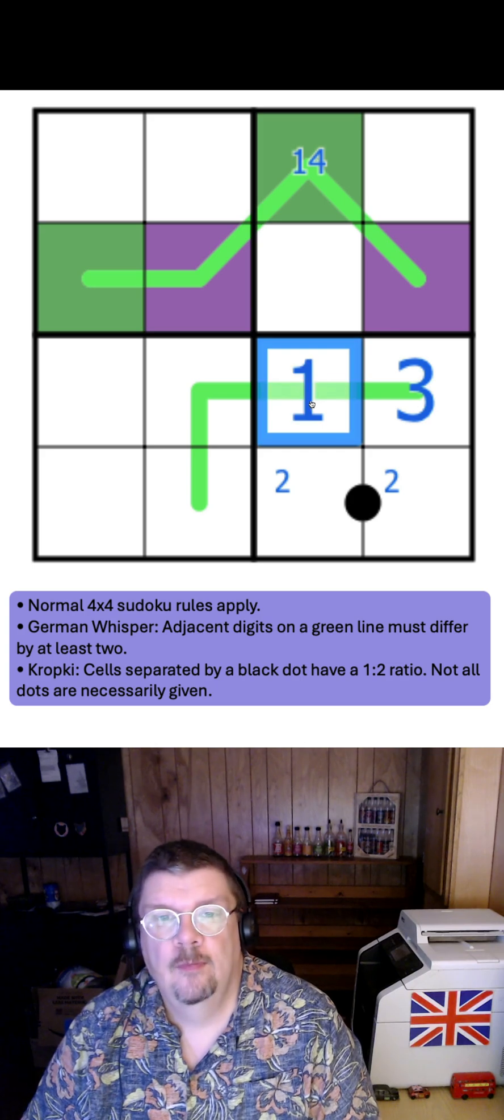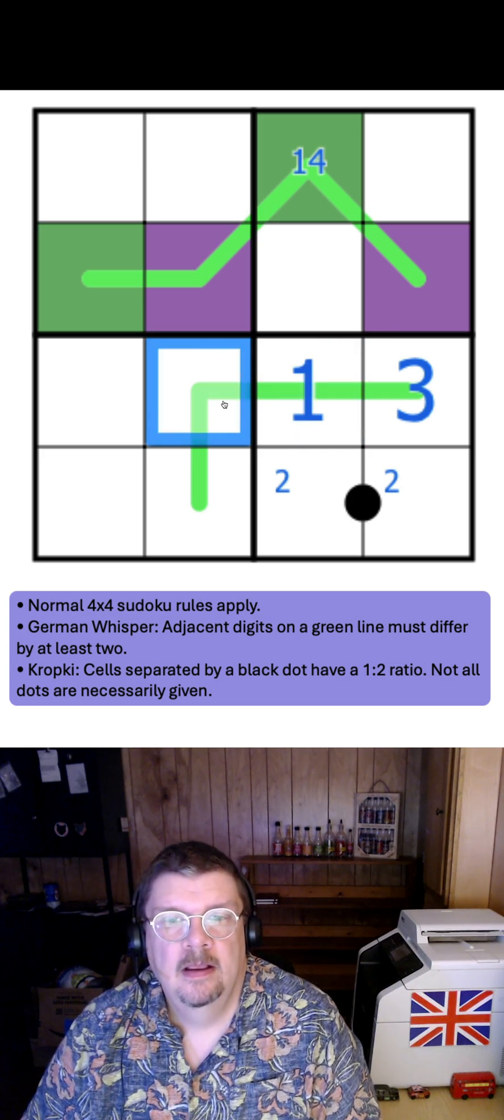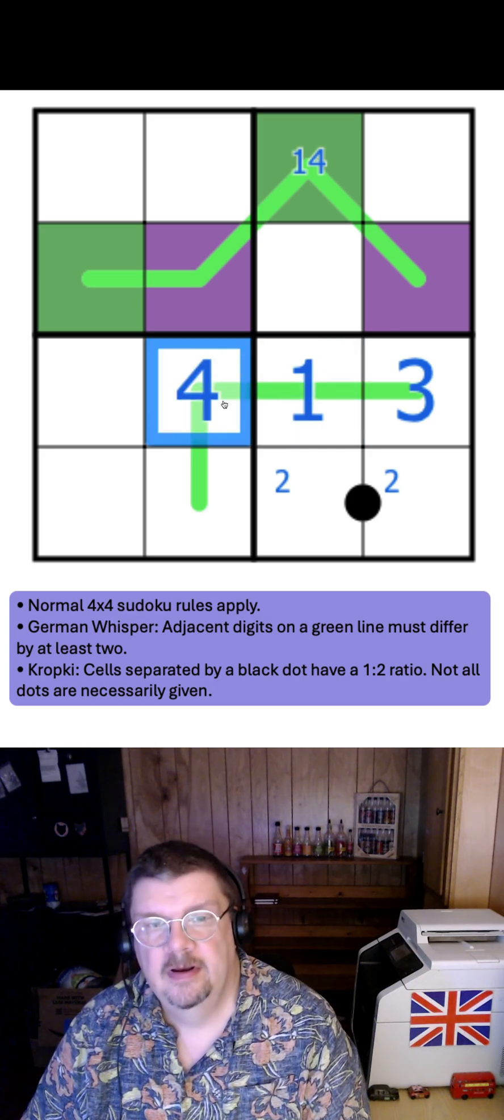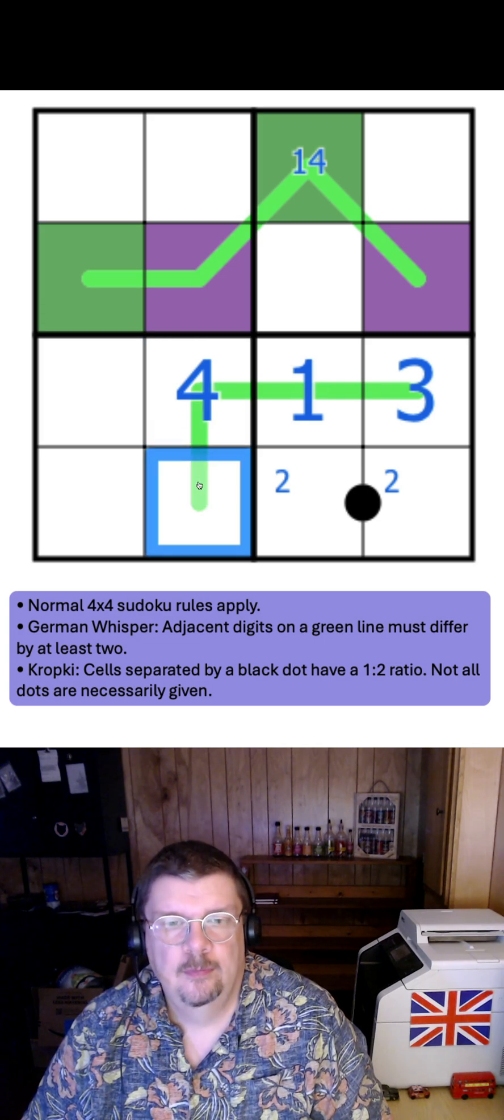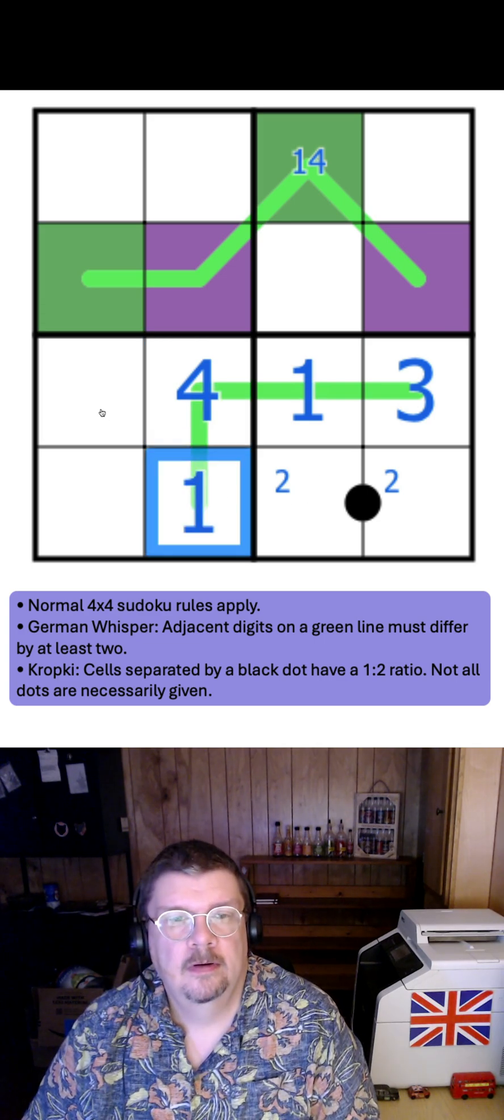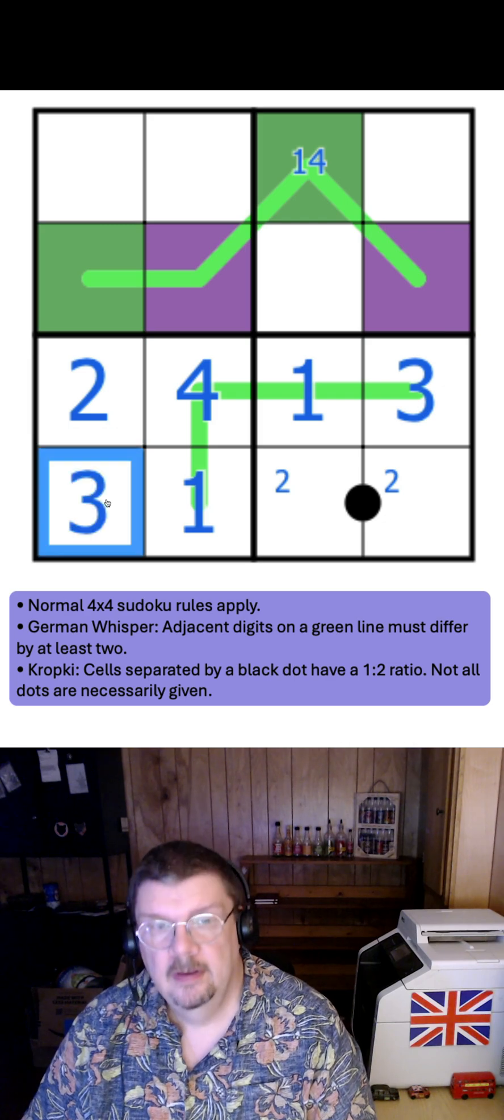That makes this a 1. This must be a high digit that's not a 3. That is a 4. This is a low digit, and because of the 2 we know is here, that's a 1. So we get a 2 there, a 3 there.